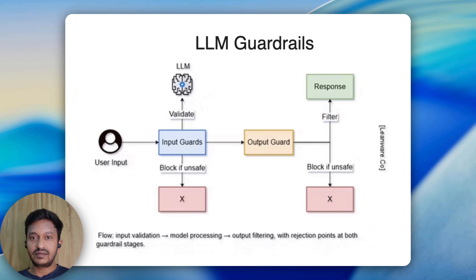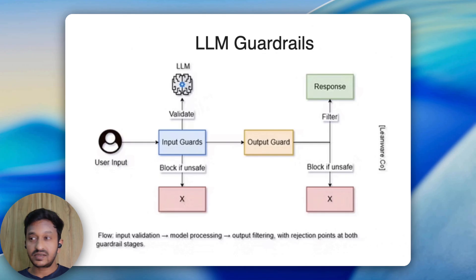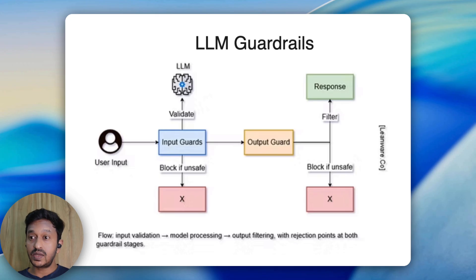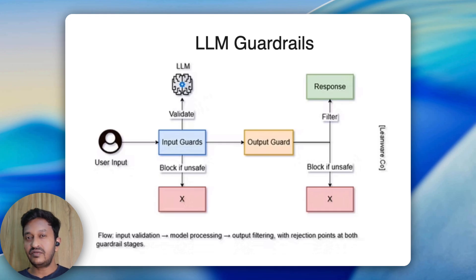You have probably seen the headlines lately — chatbots leaking private information, AI assistants generating toxic content, or even falling victim to prompt injection attacks. We need to stop this as AI engineers or developers. In this tutorial, we will start from scratch understanding what LLM guardrails are, how they work, their importance, and how we can apply them. By the end of this video, you will have a fully functional AI chatbot that detects and blocks toxic content, automatically masks personal information like email IDs and passwords, and prevents prompt injection attacks while validating every response before showing it to users.